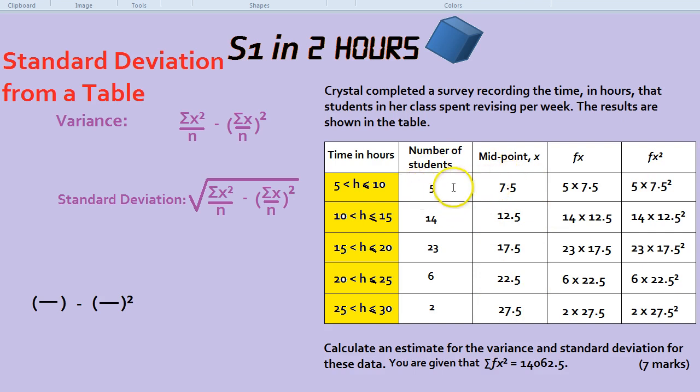So we're squaring all of these numbers and timesing them by the number of times they come up. Notice though, just to repeat, we're squaring the midpoints. We're not squaring the frequency. We're not doing 5² times 7.5 or 14². We're always squaring the midpoints. This column on the left is your golden column.